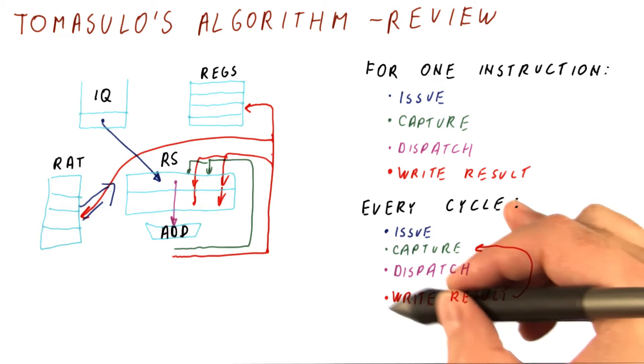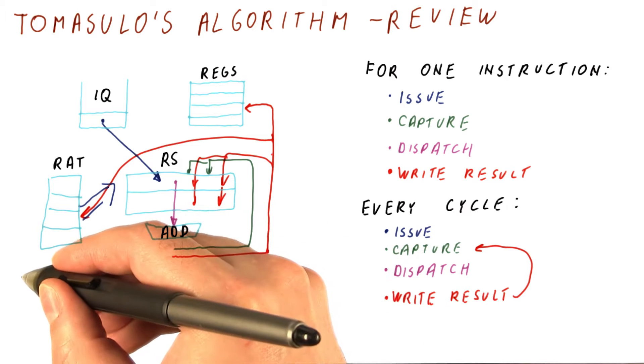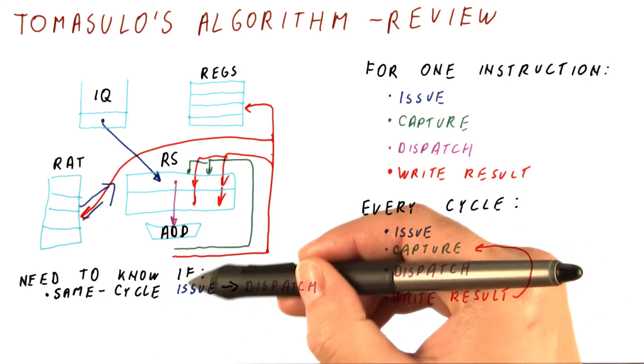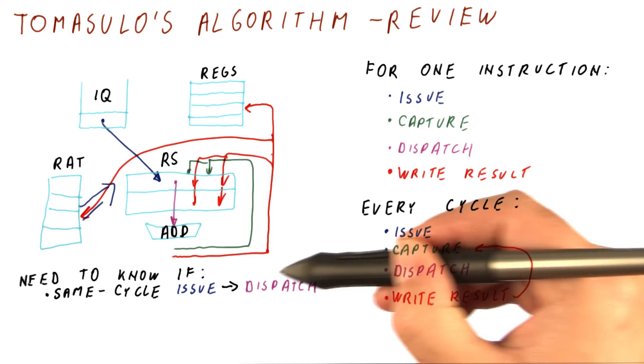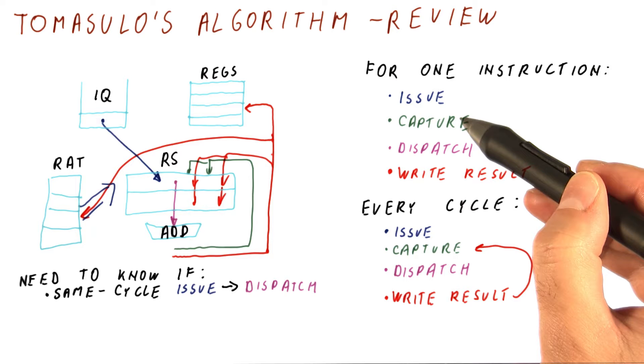Because all of these things can happen every cycle, there are some interesting things that we need to consider. And those are, can we do same cycle issue of an instruction and then immediately dispatch that instruction in the same cycle, if it doesn't need to capture any results?